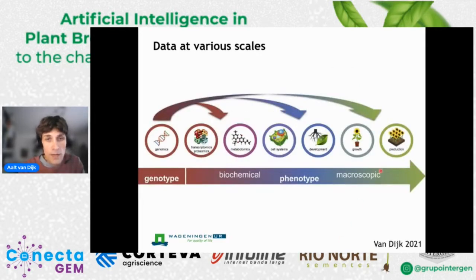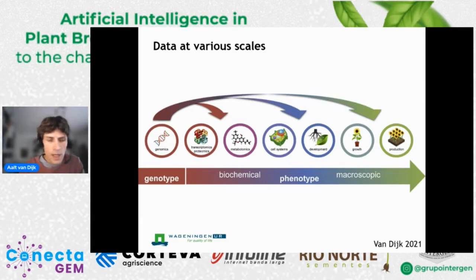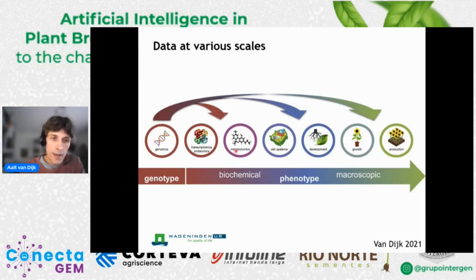When we talk about plants and omics data, we have really a lot of data at various scales available these days. There have been a lot of improvements in measurement technologies which result in the availability of data at various scales. This is a picture from a review that we wrote last year. It visualizes data that we have at many different scales, ranging from the genotype and genome level via biochemical levels of transcriptomics and metabolomics to data at the scale of plants or even larger scales.